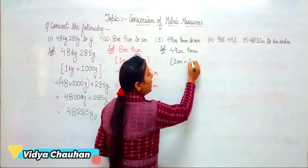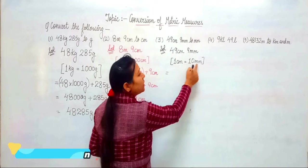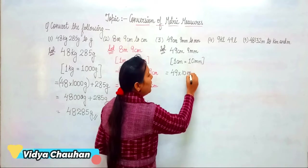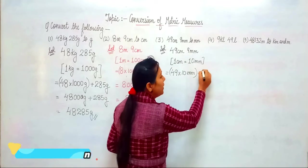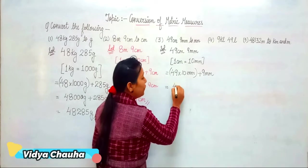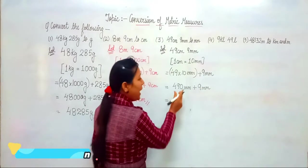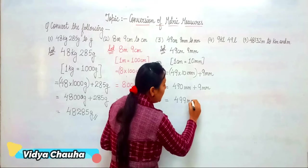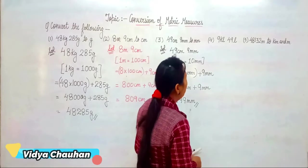There are 10 millimeters in 1 centimeter. So 1 cm = 10 mm, meaning we multiply 49 by 10: 49 × 10 = 490 mm, plus the second term 9 mm. So 490 + 9 = 499 millimeters. This is your third solution.